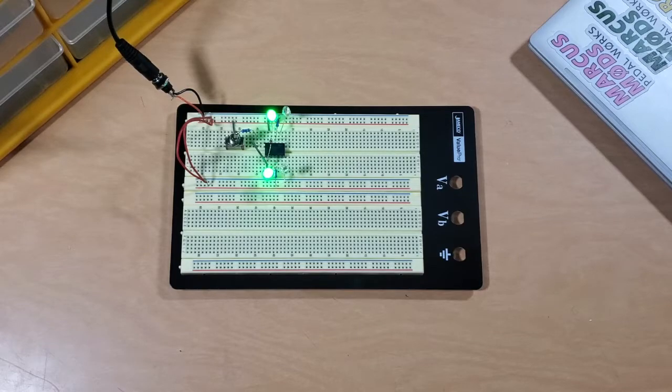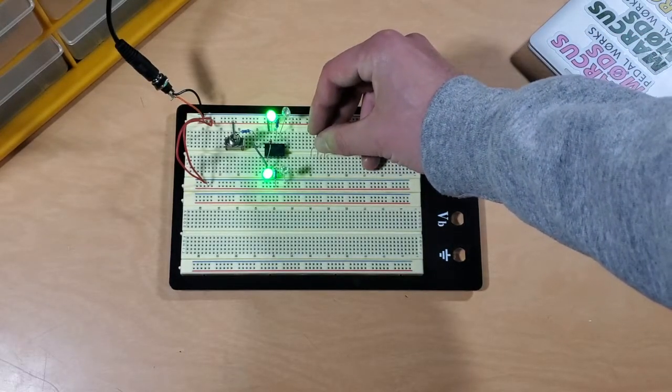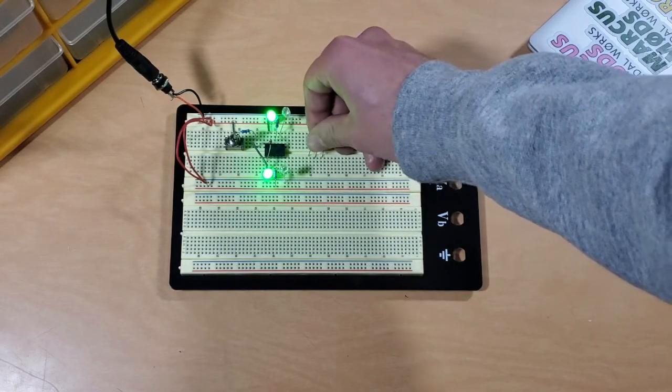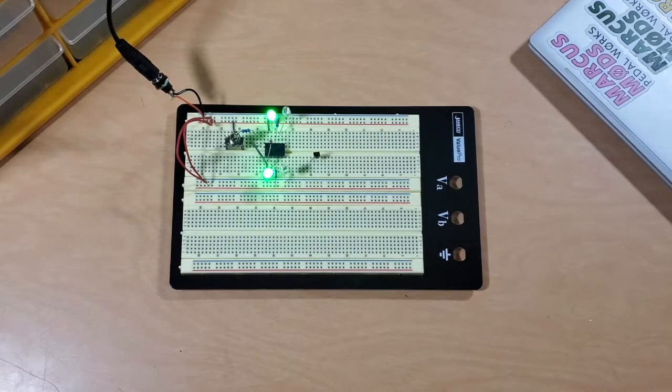So we've got that relay already on the board, and that's going to be routing our guitar signal. That's the same as those two outer columns of our 3PDT switch. Now we need to add in a JFET shunt switch to control our LED. So we'll put our JFET on the board.